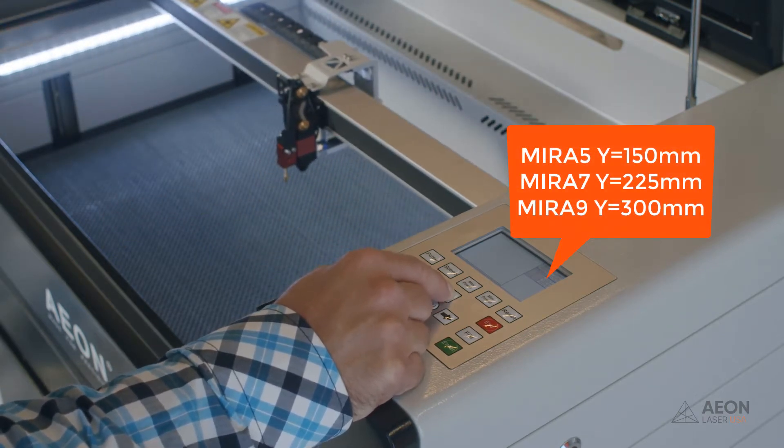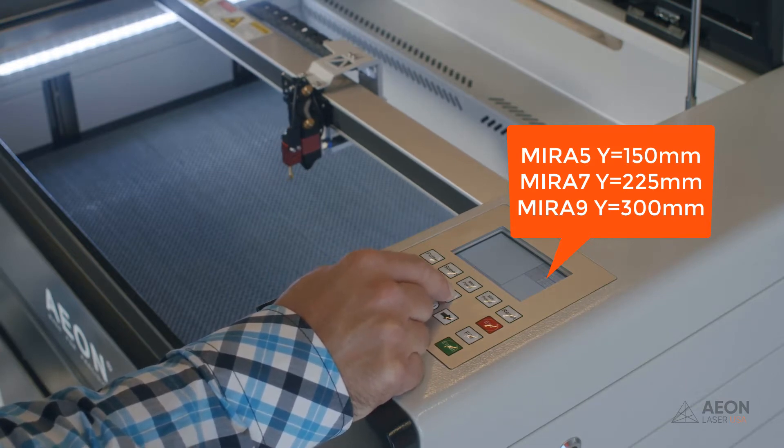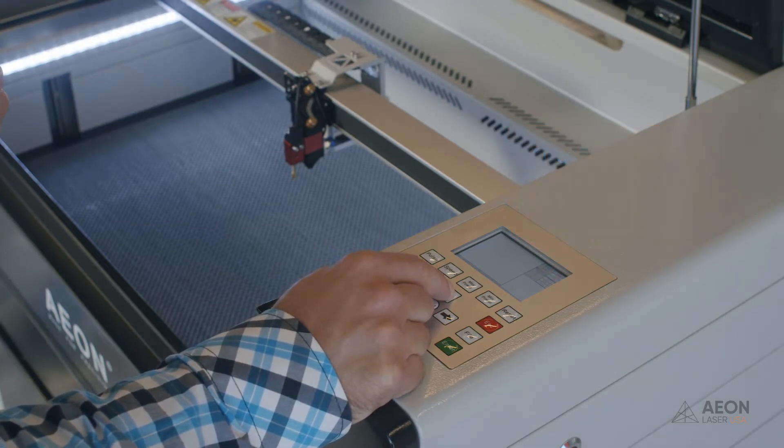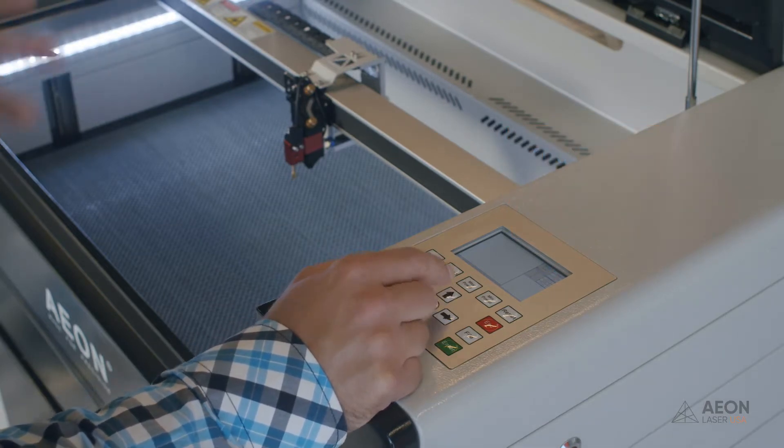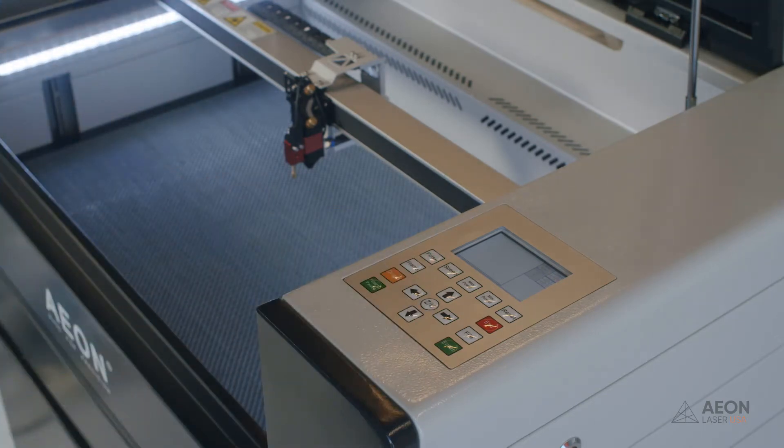If you're using a Mira 9, you want to be at 300, half of 600, which is where you would have been all the way to the front. You don't have to be exact. I'm at 225 and a half. That's fine. The idea is that the gantry is in the middle of the machine.